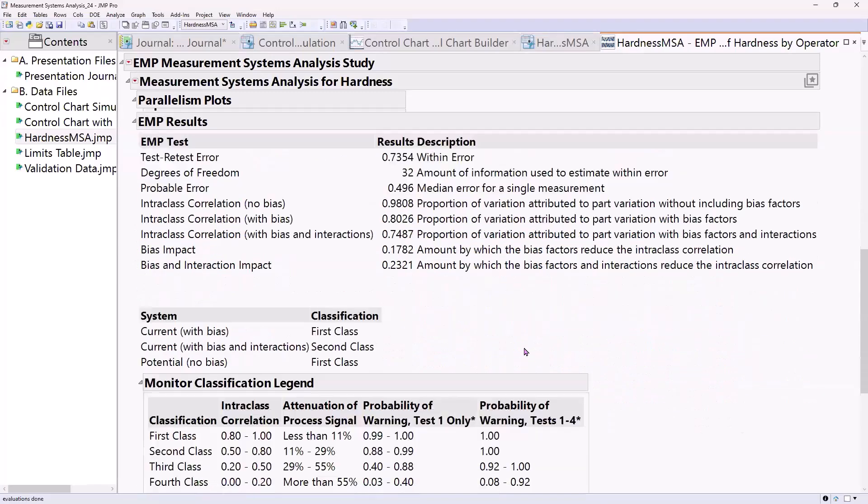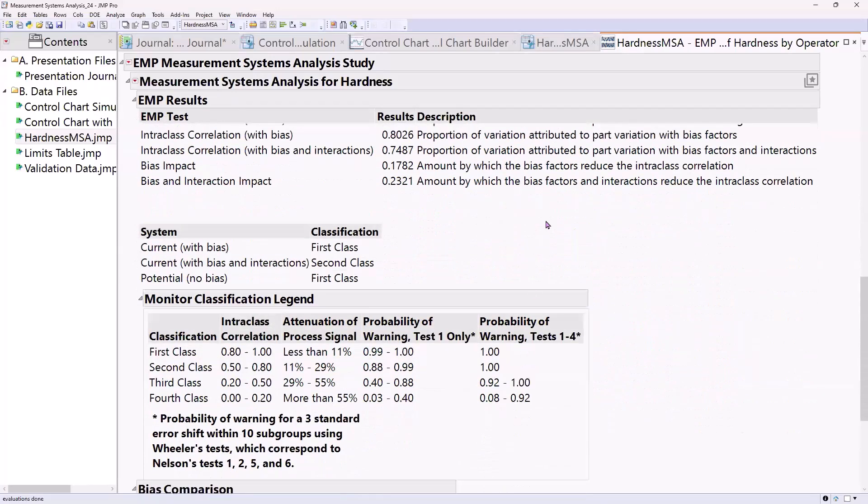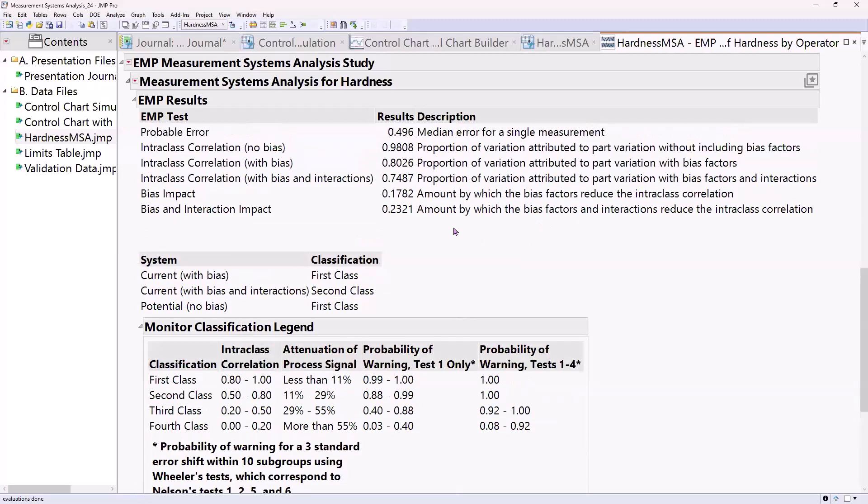Let's just look at the figures of merit first. The figure of merit, the intraclass correlation with bias, bias is including the operator. So imagine I'm part of that bias. That's something to do with training procedure. But it has to do with how the operator is interacting with the measurement device.